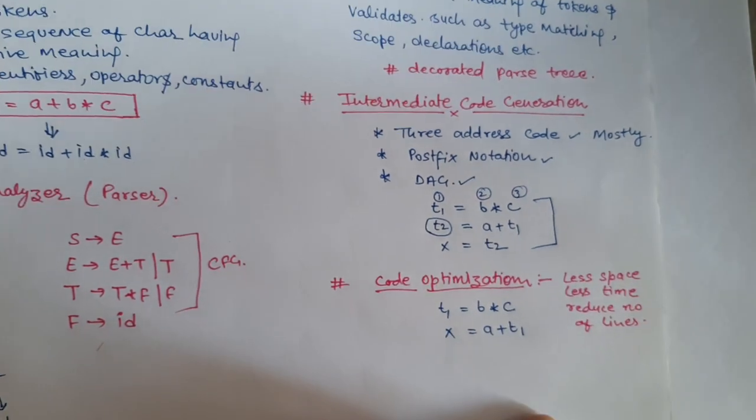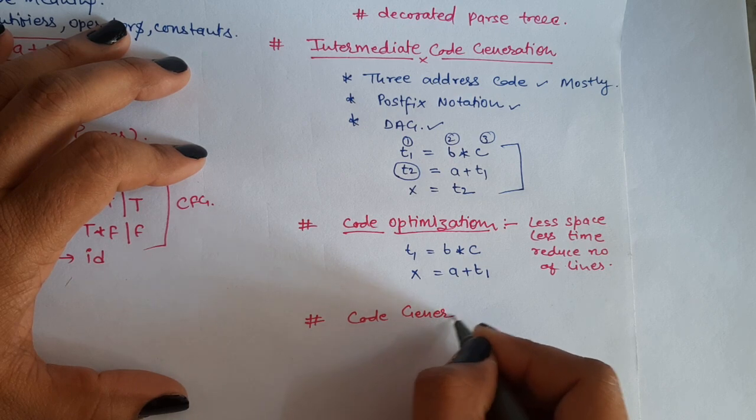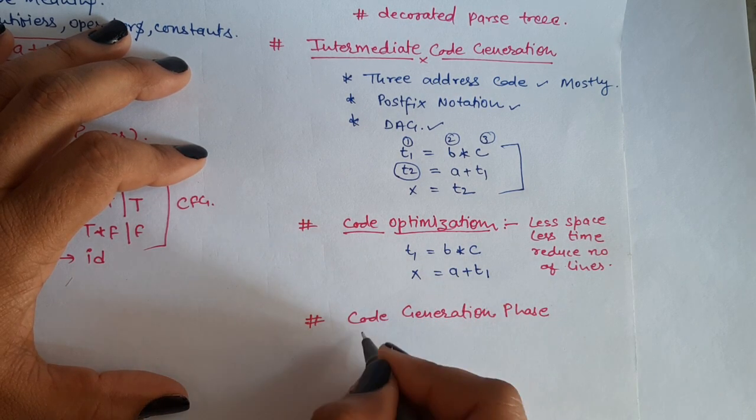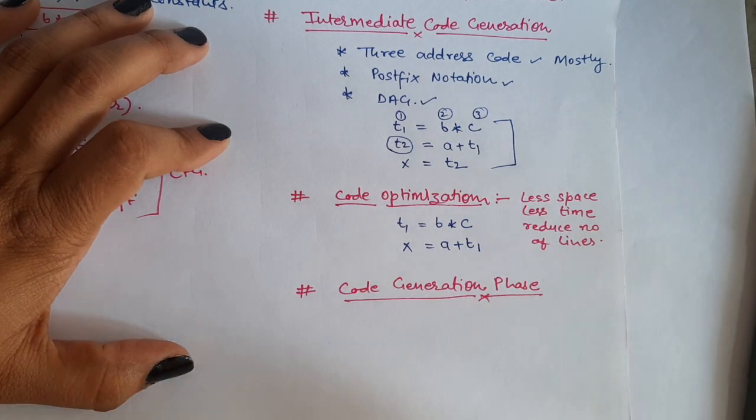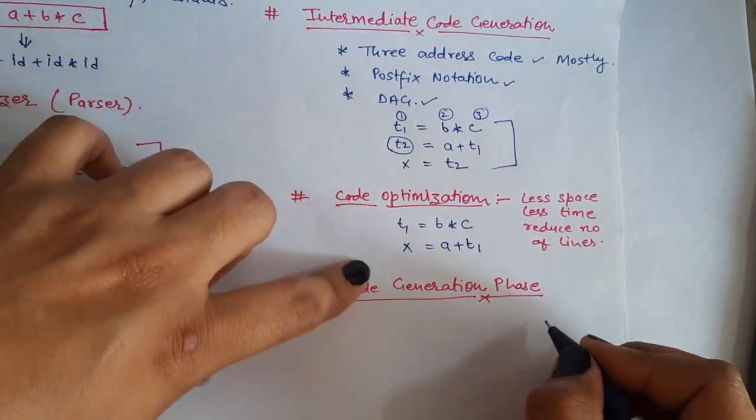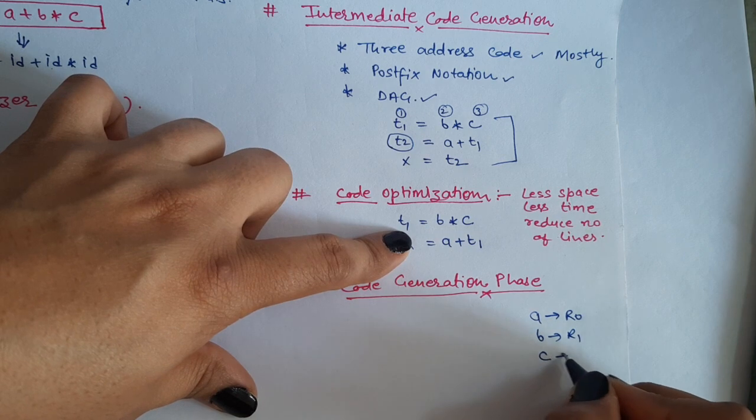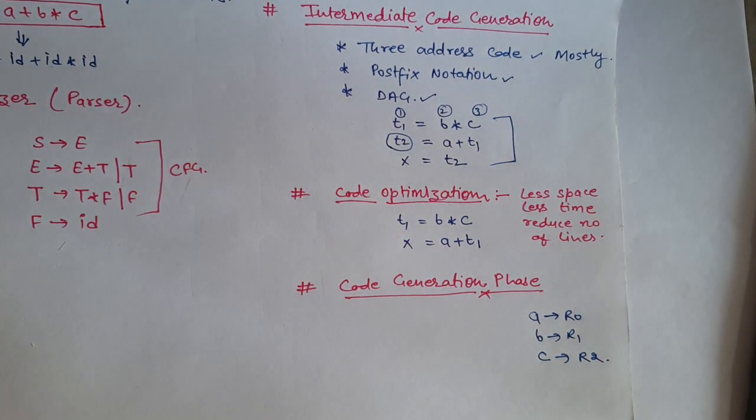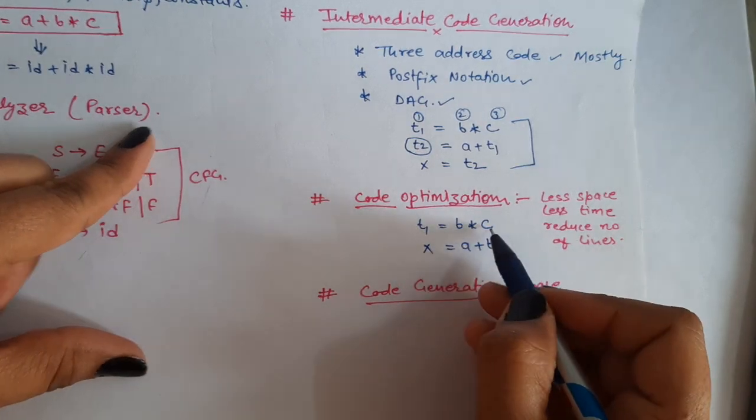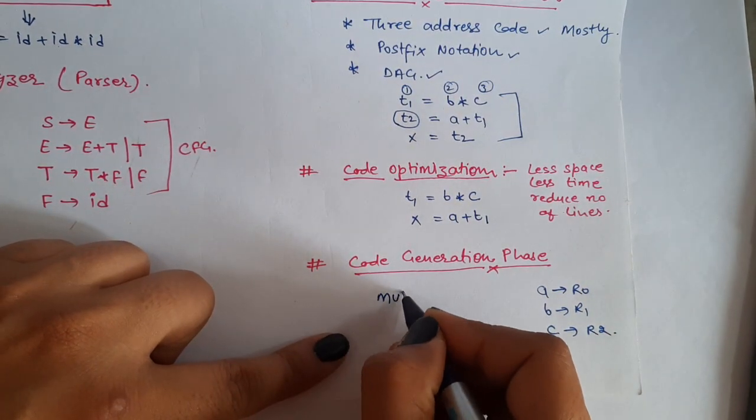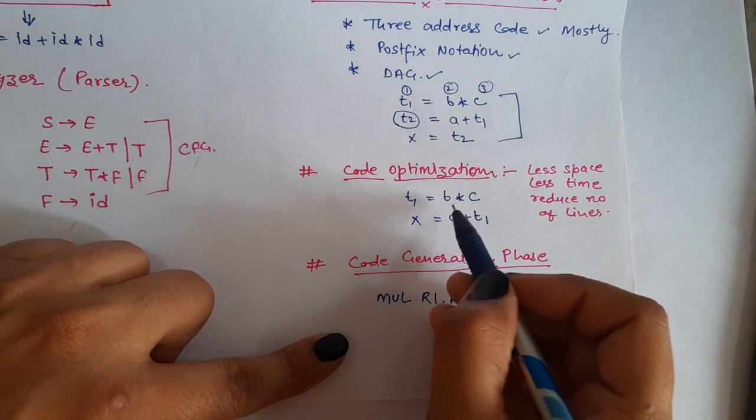Finally your target code is generated in machine language. Like for example, if we understand, value of a is assigned to the r0 and b to r1 and c to r2. So if we write machine code for this to make the statement, the multiplication we can perform by the instruction multiply R1 comma R2. R1 has the value of B, R2 has the value of C. We have to multiply B star C, so multiply R1 R2.